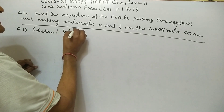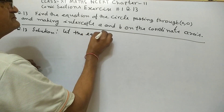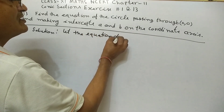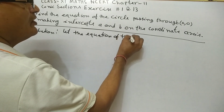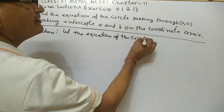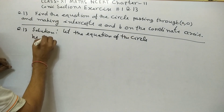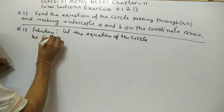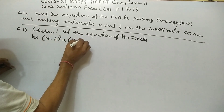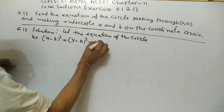Find the location of the circle passing through (0,0) and making intercepts A and B on the coordinate axes. Let the equation of the circle be: (x - h)² + (y - k)² = r².